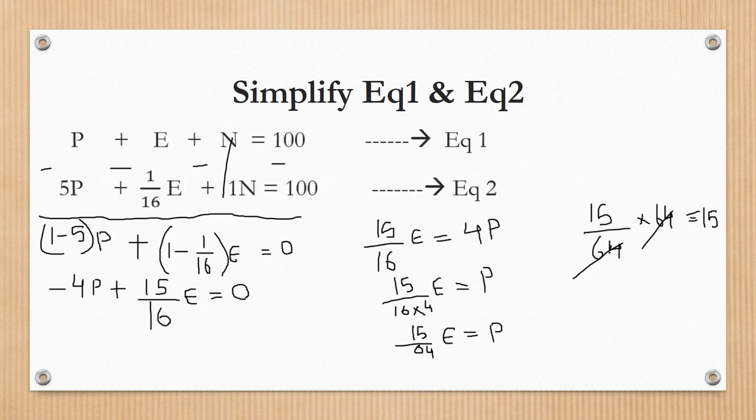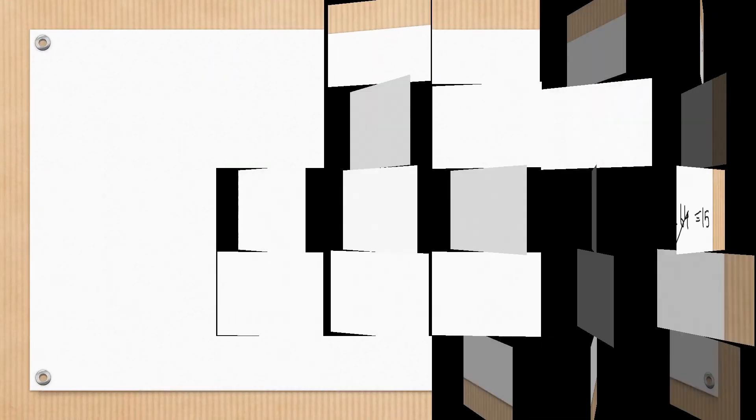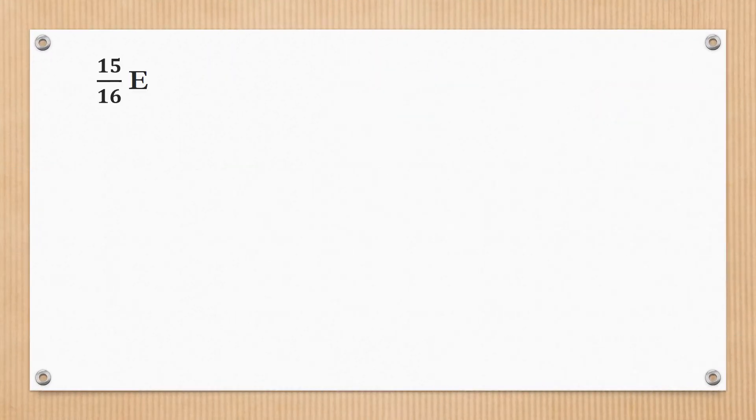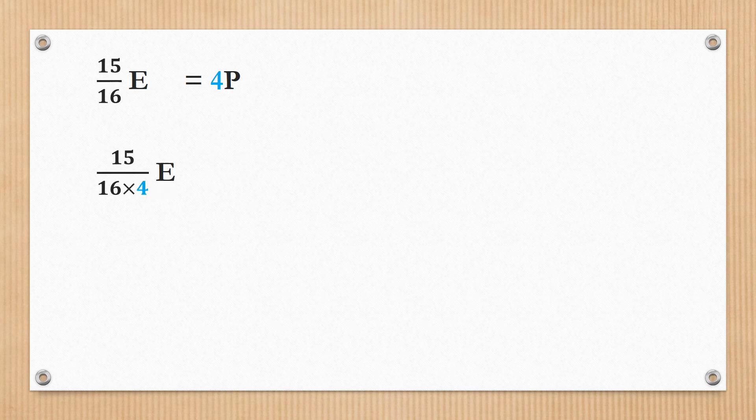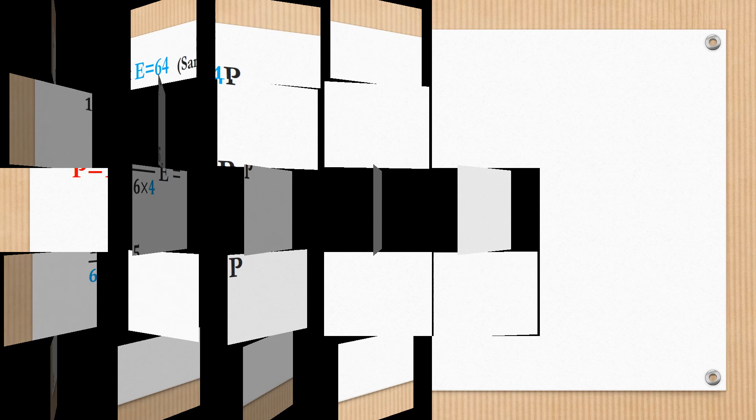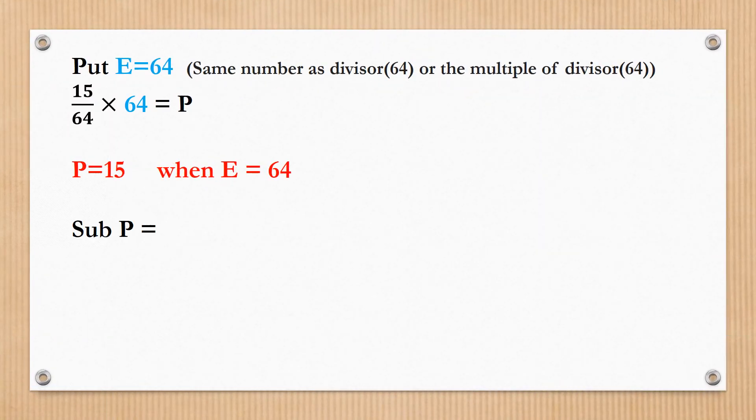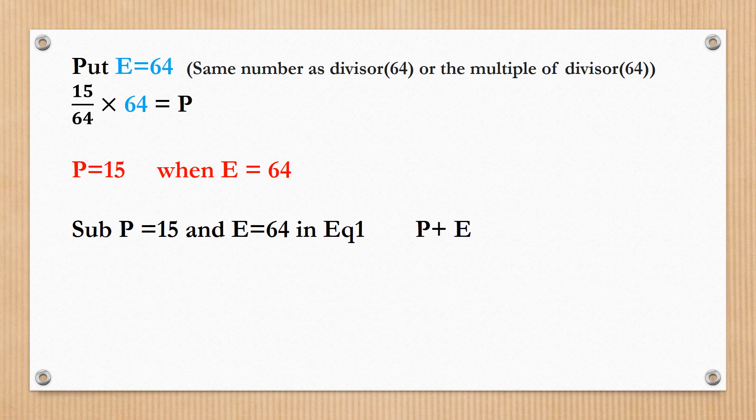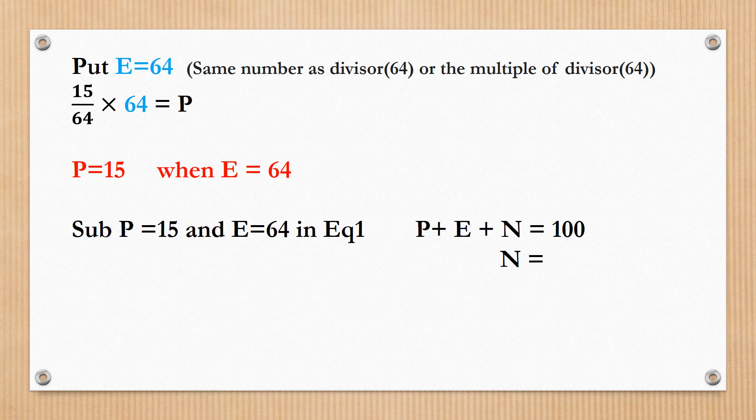Substitute P and E values in equation 1. P plus E plus N equals 100. N equals 100 minus 79. The pen is 15, the eraser is 64, so N equals 21.